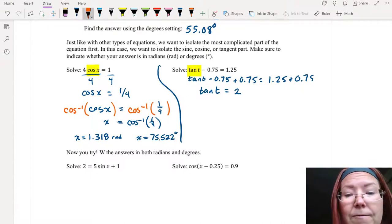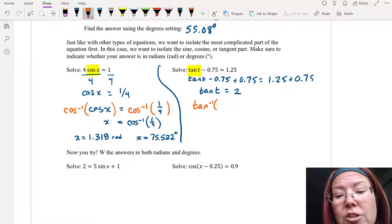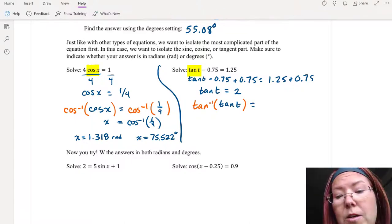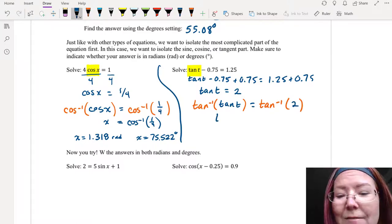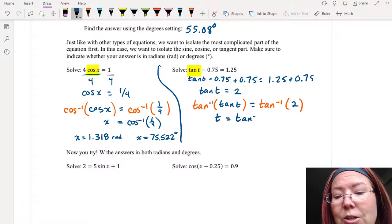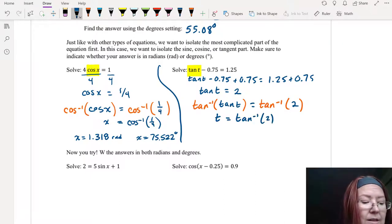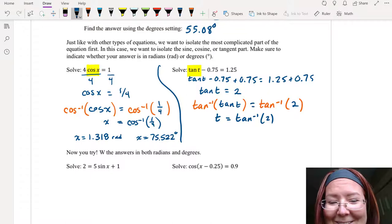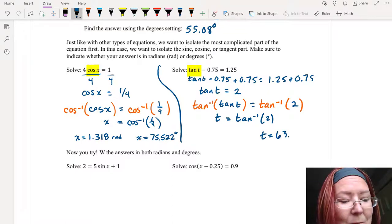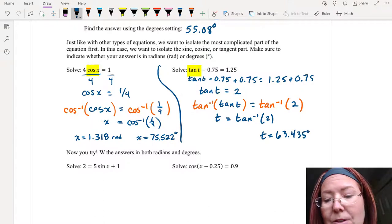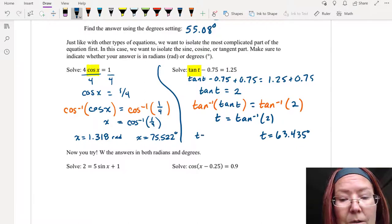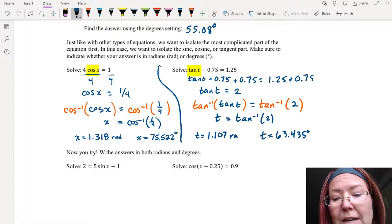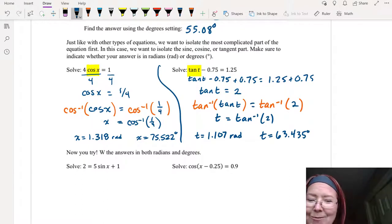That gives us tangent t equals 2. And now we can apply an inverse tangent to do inverse tangent of tangent t equals inverse tangent of 2. Simplifying we'll have t equals inverse tangent of 2. First I'm going to do this one in degrees. So we'll start with t equals 63.435 degrees and then I'm going to shift it back to radians which gives me a t value of 1.107 radians.